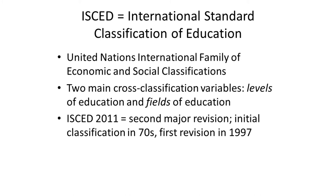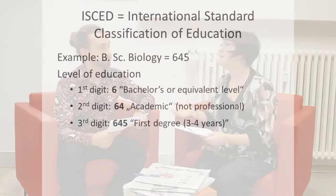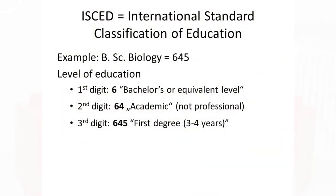There are also multiple versions of ISCED. There was one done in the 1970s, another one done in 1997, and then an updated one in 2011, so you might see ISCED 2011 or ISCED 97. You'll need to pay attention to those versions because they're slightly different. As an example, imagine that Yannick is getting a bachelor's degree in biology — his ISCED code would be 645.